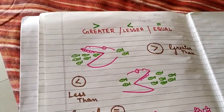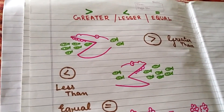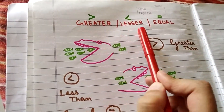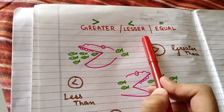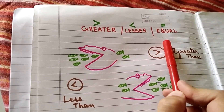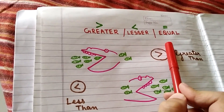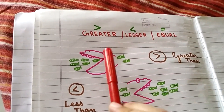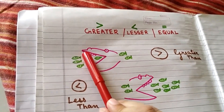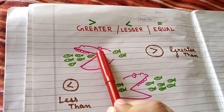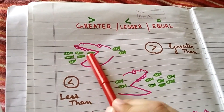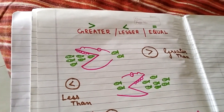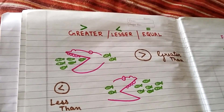Welcome to your maths class. The topic for today is greater, lesser and equal. I have tried to explain the topic with the help of this crocodile or an alligator. With the help of his mouth I am going to tell you what are the signs.